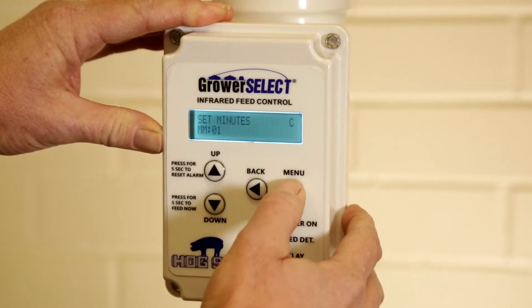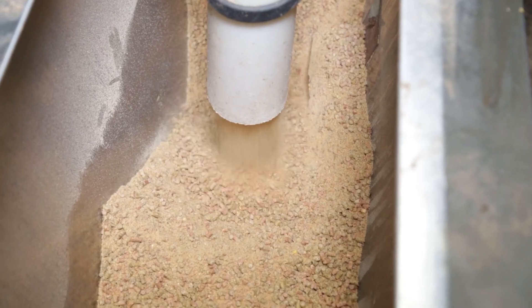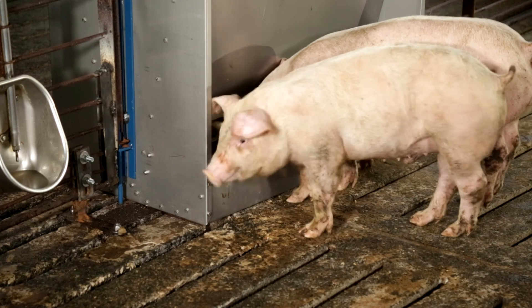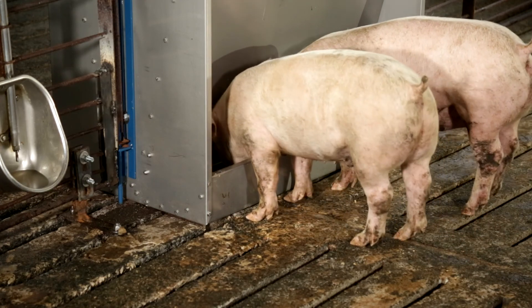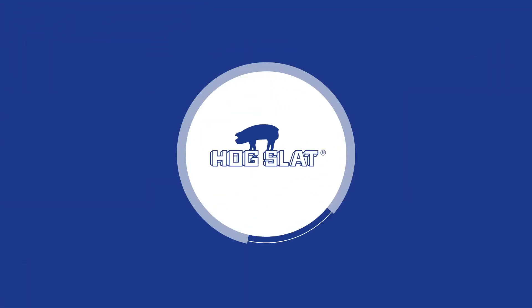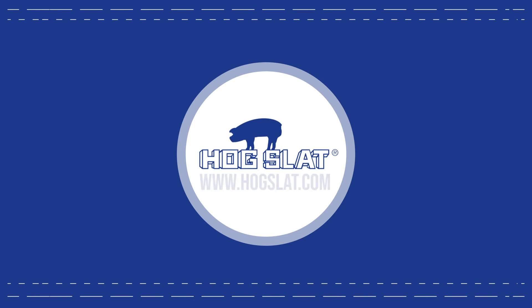Plug your control box back in, turn on the power, and program the control with the times needed for your specific feeding schedule. To purchase your HS820 infrared control, you can visit any Hogslat store or go to our website at www.hogslat.com.